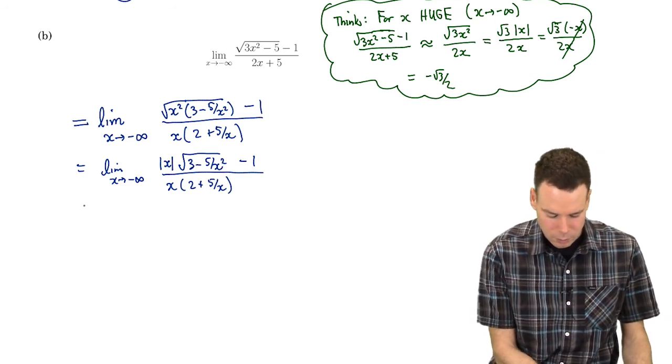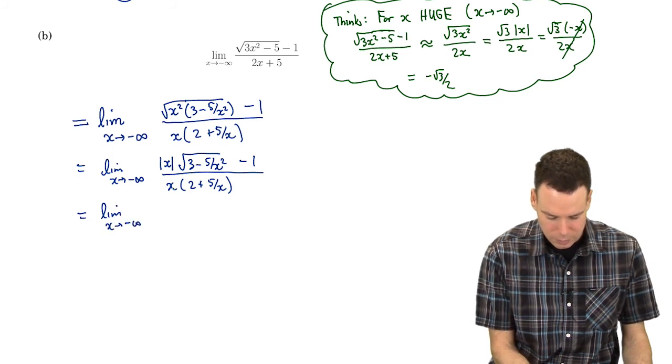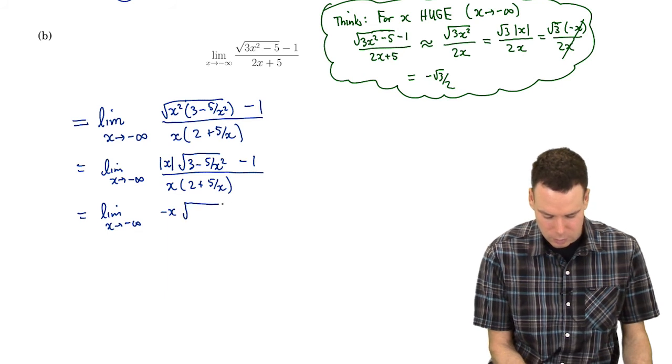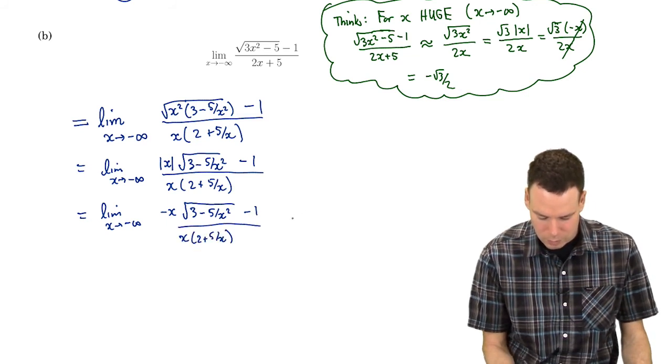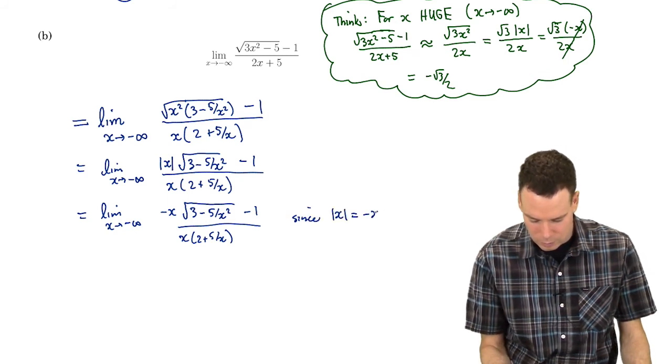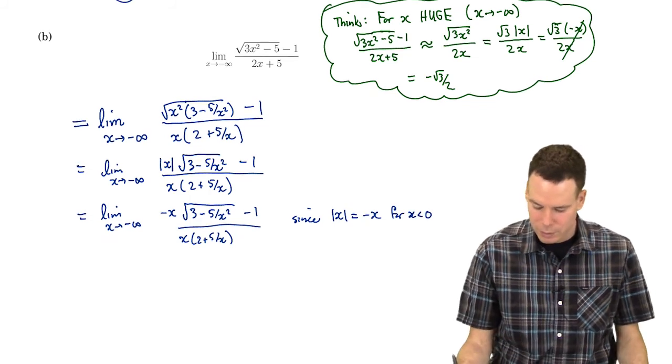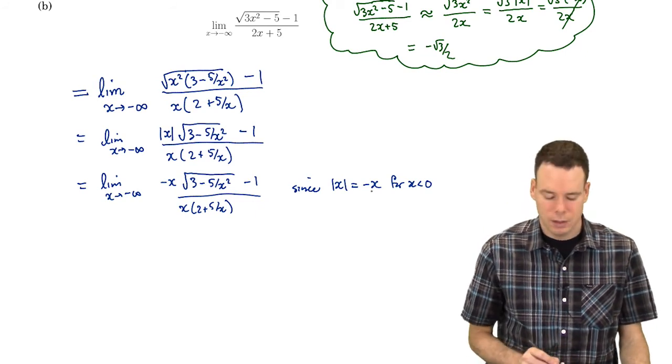And now with that absolute value of x I can replace the absolute value of x with just a negative x, over x times 2 plus 5 over x, since absolute value of x is negative x for x less than 0. When x is negative, the absolute value of x is equivalent to just taking negative of the x value.